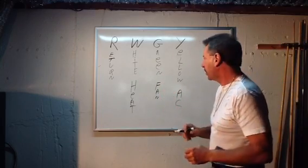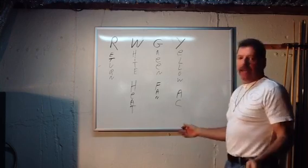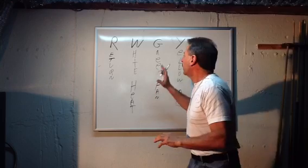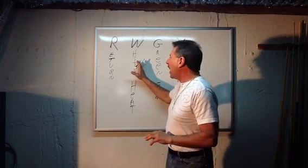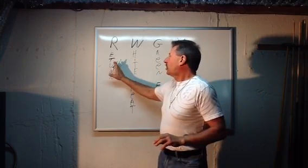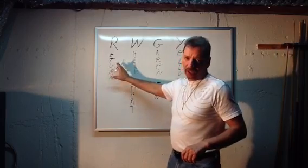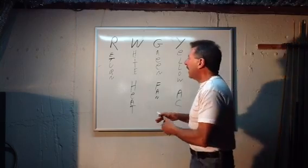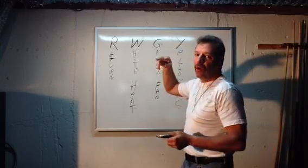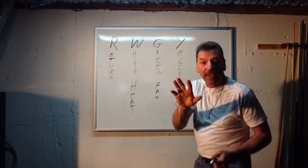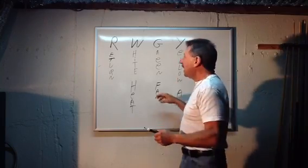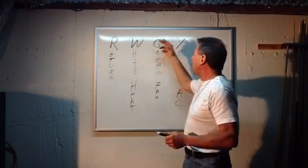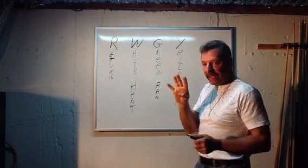What any thermostat does is simply short out the proper wire to the R, or the return line. You could easily take the thermostat off the wall, and you would see a red and a white sticking out if you have heat only. If you also have central air conditioning, there'll be four wires: red, white, green, and yellow.